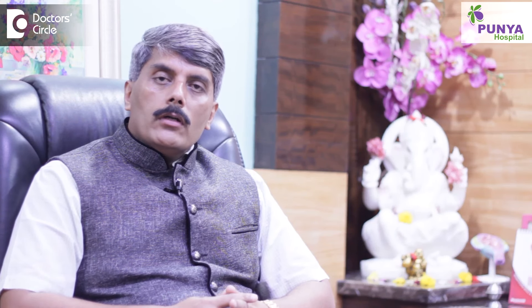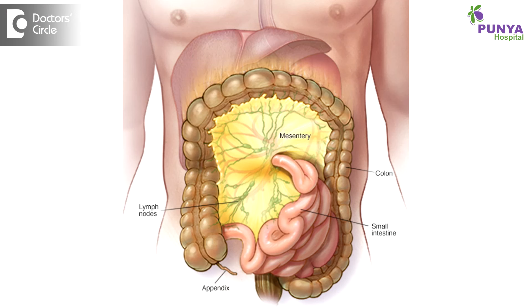Mesentery. The mesentery is an organ which houses numerous blood vessels and is probably the base of the whole length of the small and large intestine.